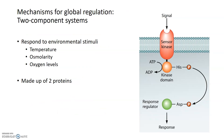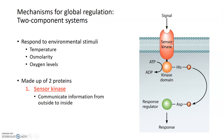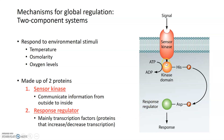The next mechanism for global regulation is two-component systems, which are very well studied in bacteria, though they are present in all three domains of life — bacteria, archaea, and eukaryotes. A two-component system functions to respond to environmental stimuli, specifically temperature, changes in osmolarity or salt levels, and oxygen levels. It is named as such because it's made up of two proteins: a sensor kinase and a response regulator. The sensor kinase senses the signal outside the cell and communicates it inside by autophosphorylating itself.